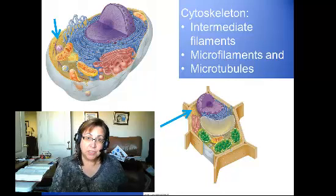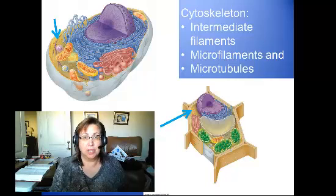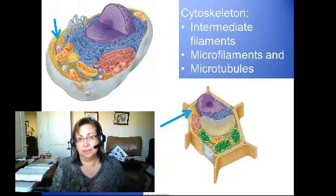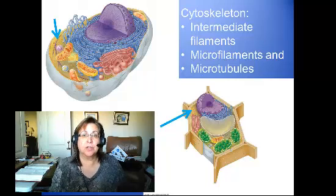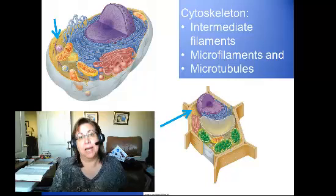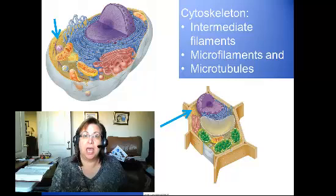From our textbook we can see an illustration of an animal cell at the top left and a plant cell at the bottom right, and the blue arrows are pointing to elements of the cytoskeleton. There are three main types: intermediate filaments, microfilaments, and microtubules.